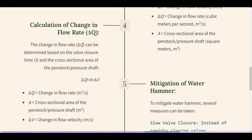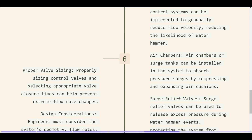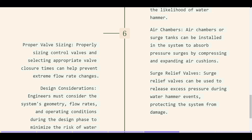Mitigation of water hammer: slow valve closure — control systems can gradually reduce flow velocity, reducing the likelihood of water hammer. Air chambers or surge tanks can be installed to absorb pressure surges by compressing and expanding air cushions. Surge relief valves can release excess pressure during water hammer events, protecting the system from damage. Proper valve sizing and selecting appropriate valve closure times can help prevent extreme flow rate changes. Engineers must also consider the system's geometry, flow rates, and operating conditions during the design phase to minimize the risk of water hammer.